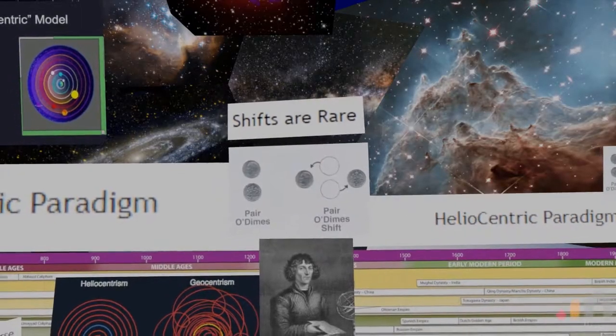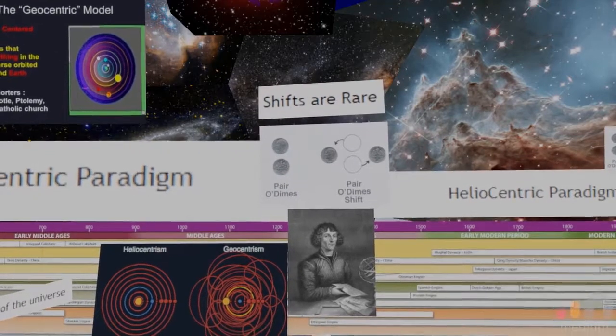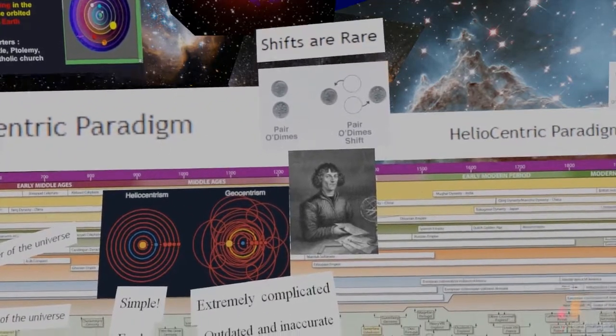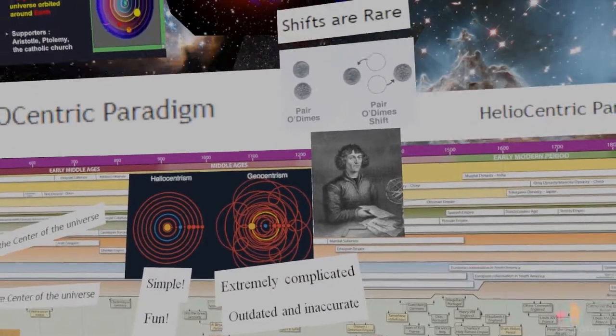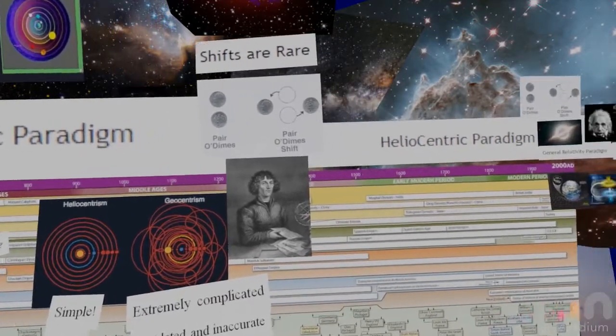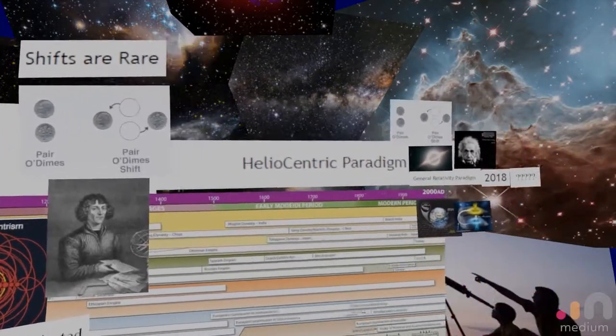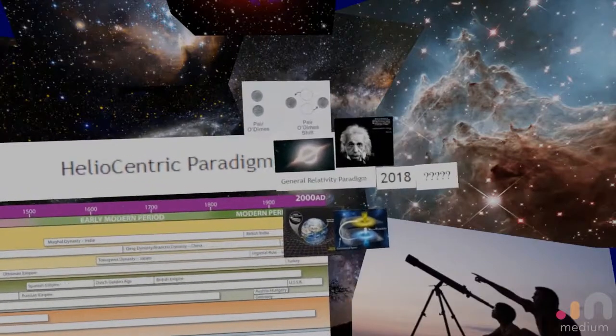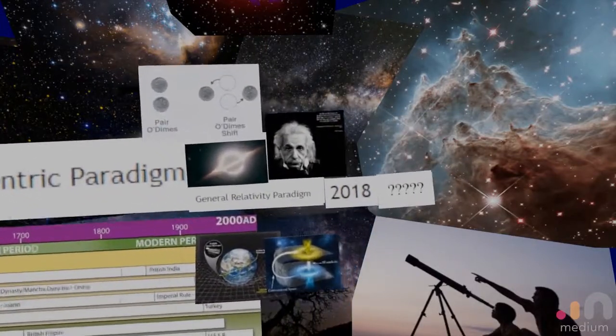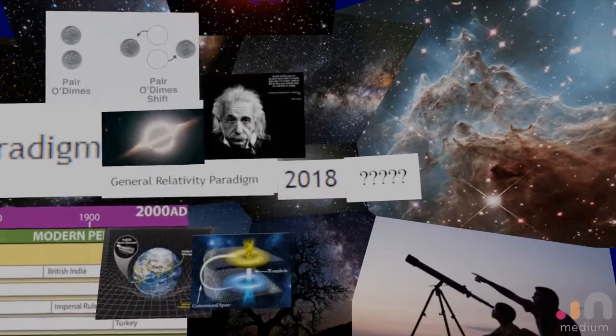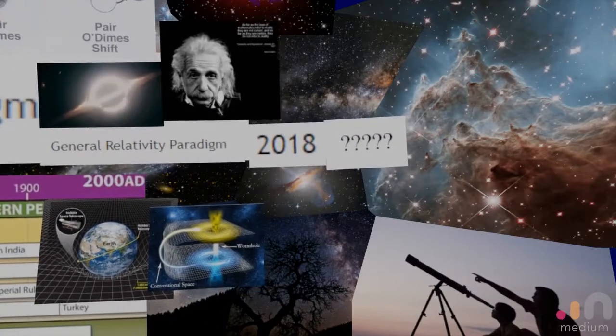Paradigm shifts are actually pretty rare. The heliocentric model paradigm shift was really, to my knowledge, the first major paradigm shift that took place. And then we had another major paradigm shift in how we looked at space when we adopted Albert Einstein and his general theory of relativity.